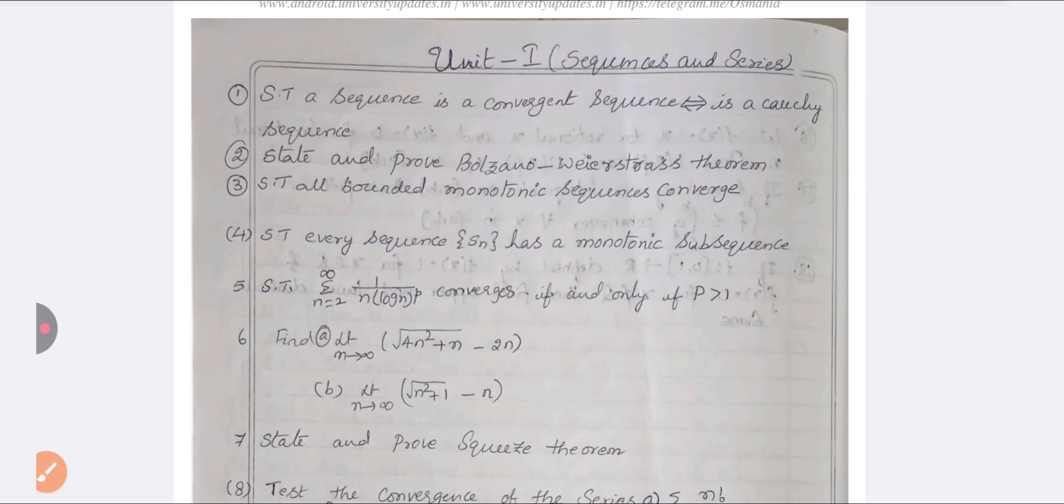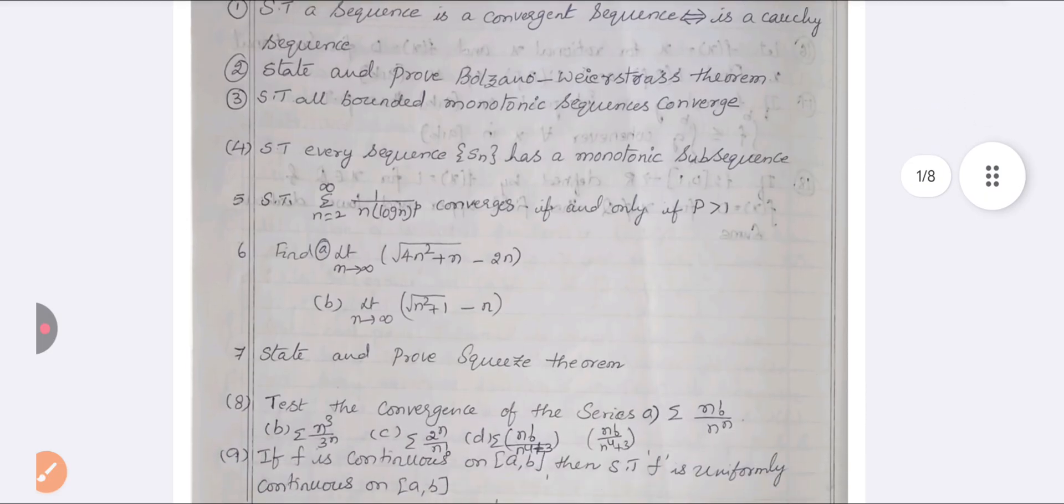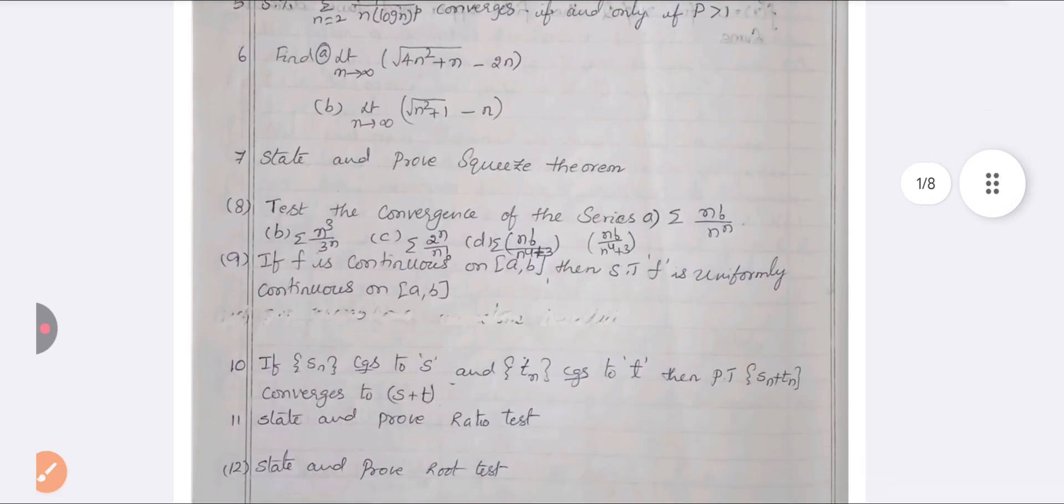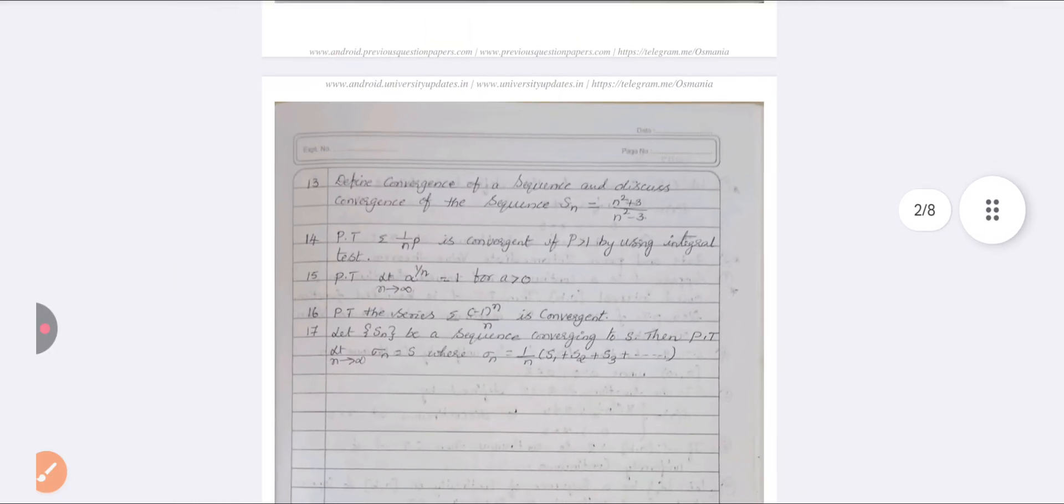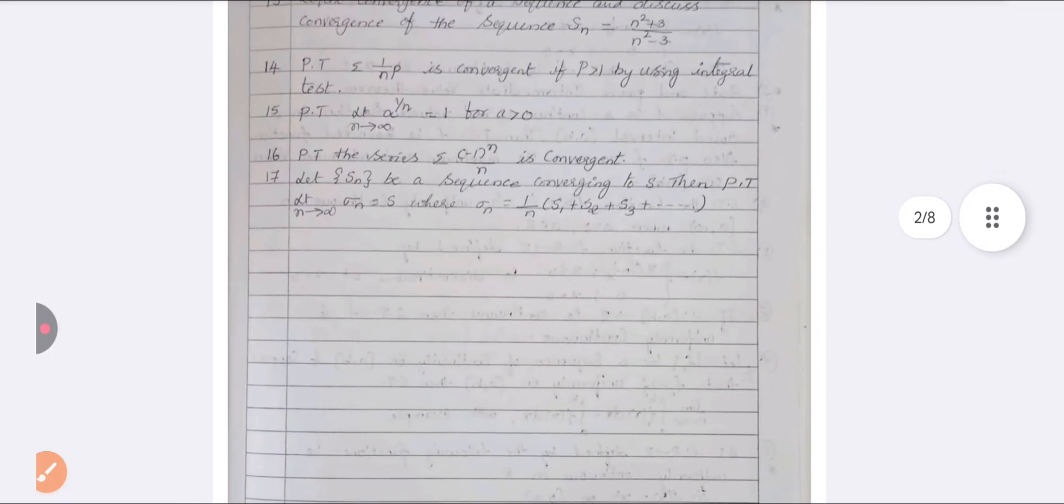This is from unit number one. This PDF is available in our telegram group. Just I am scrolling the PDF - you can pause it, or else if you want this PDF you can go and check out in our telegram group, it will be available.